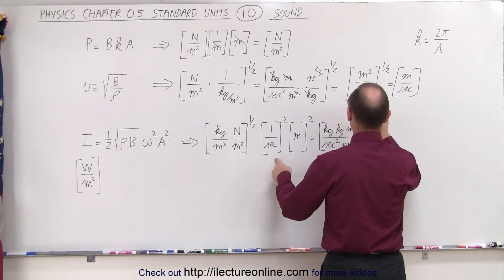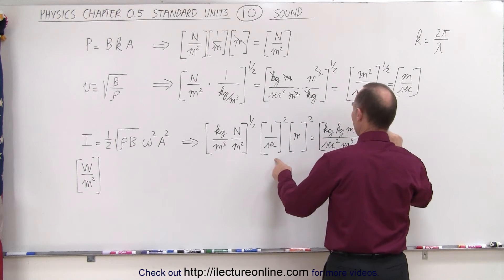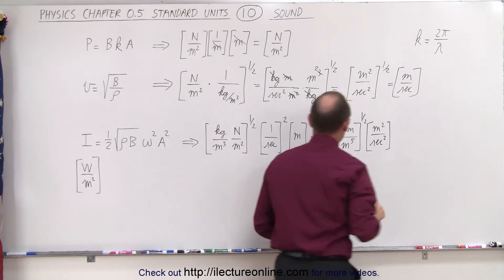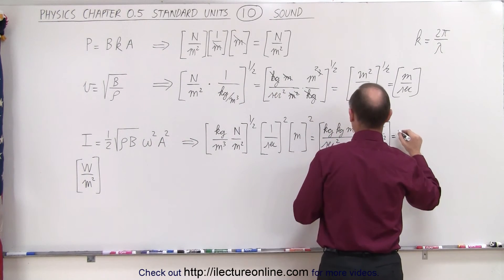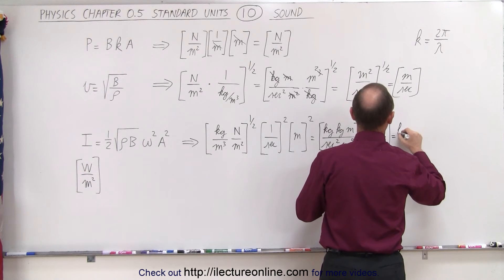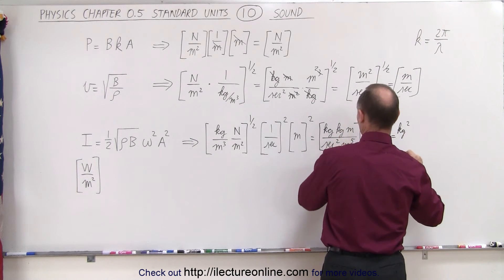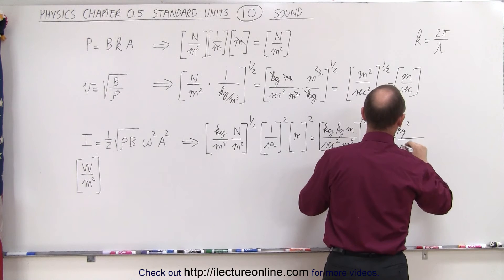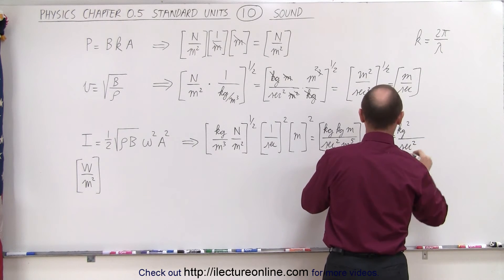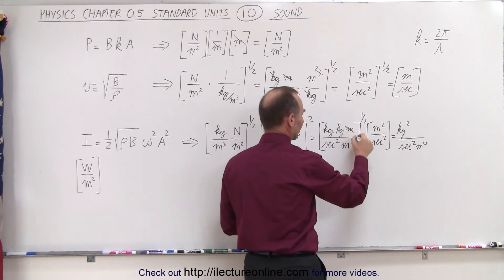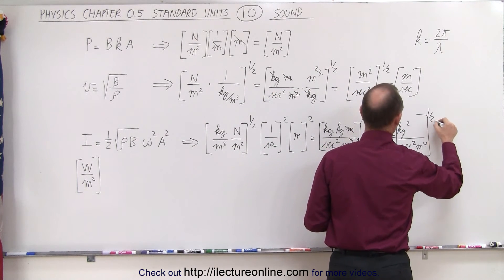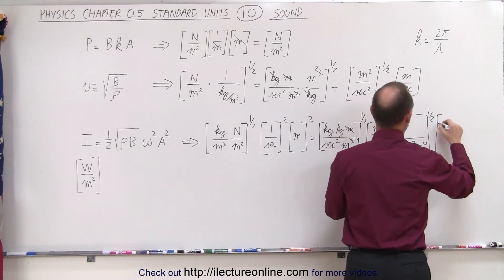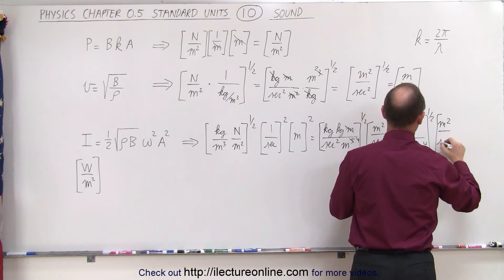Taking the square root of that portion and multiplying by the meters squared per second squared from the angular frequency and amplitude terms, we simplify to: kilograms squared divided by seconds squared times meters to the fourth power, take the square root, then multiply by meters squared over seconds squared.